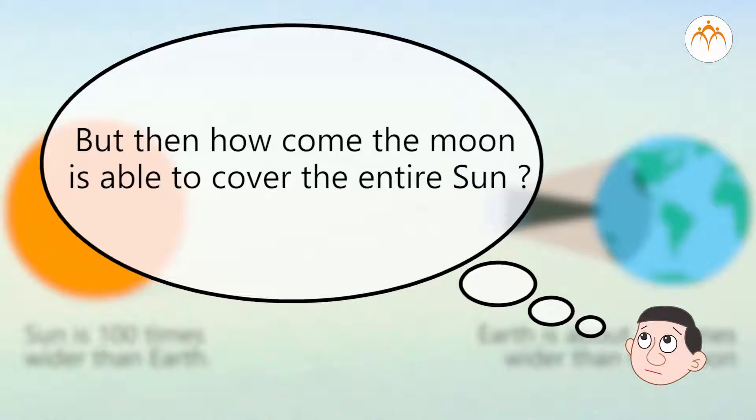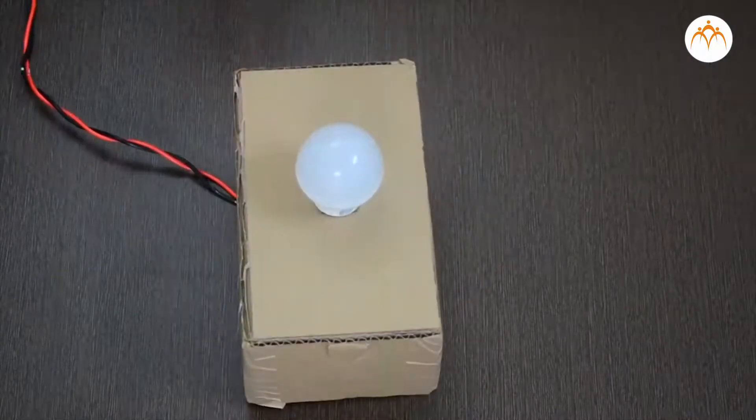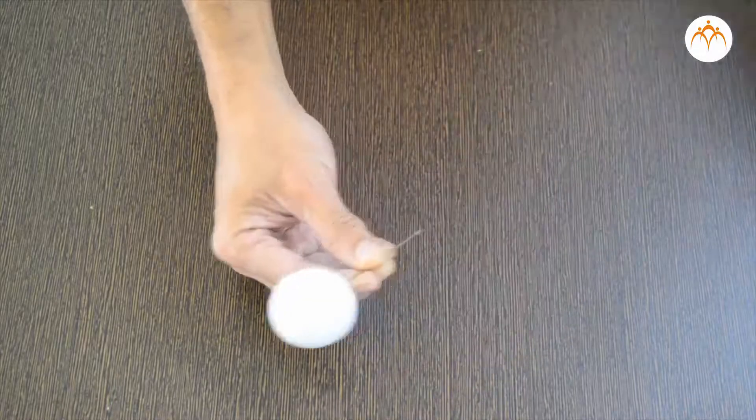This has to do with the relative distance between these three. The moon is much closer to Earth. The moon is about 400 times closer to Earth. We will try to simulate this with the help of a bulb and a plastic ball and balloon.